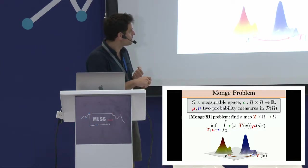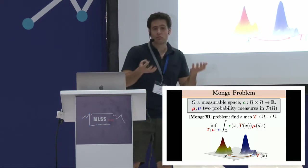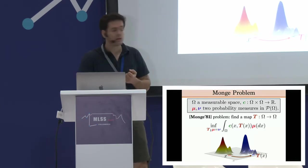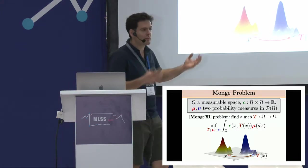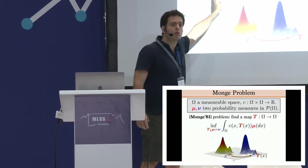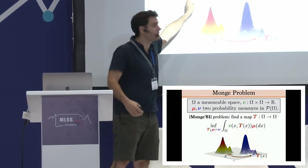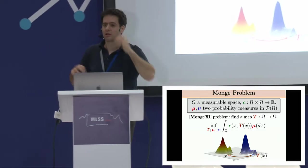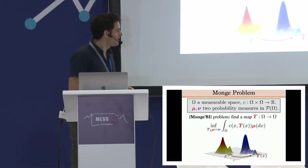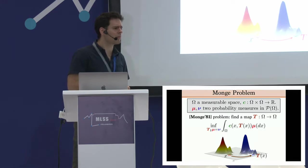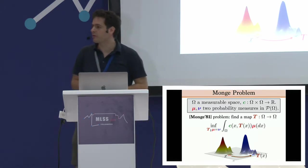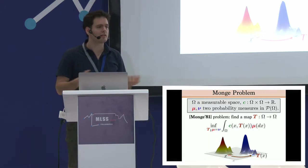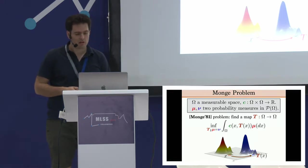The cost is the distance from x to t(x), quantified by the cost function. You weight this cost by the mass being moved and integrate. The constraint is the push-forward: the push-forward of mu under t must equal nu — what you push and get in the end is what you wanted. This is an optimization problem, but the push-forward constraint is not something familiar from standard optimization textbooks.